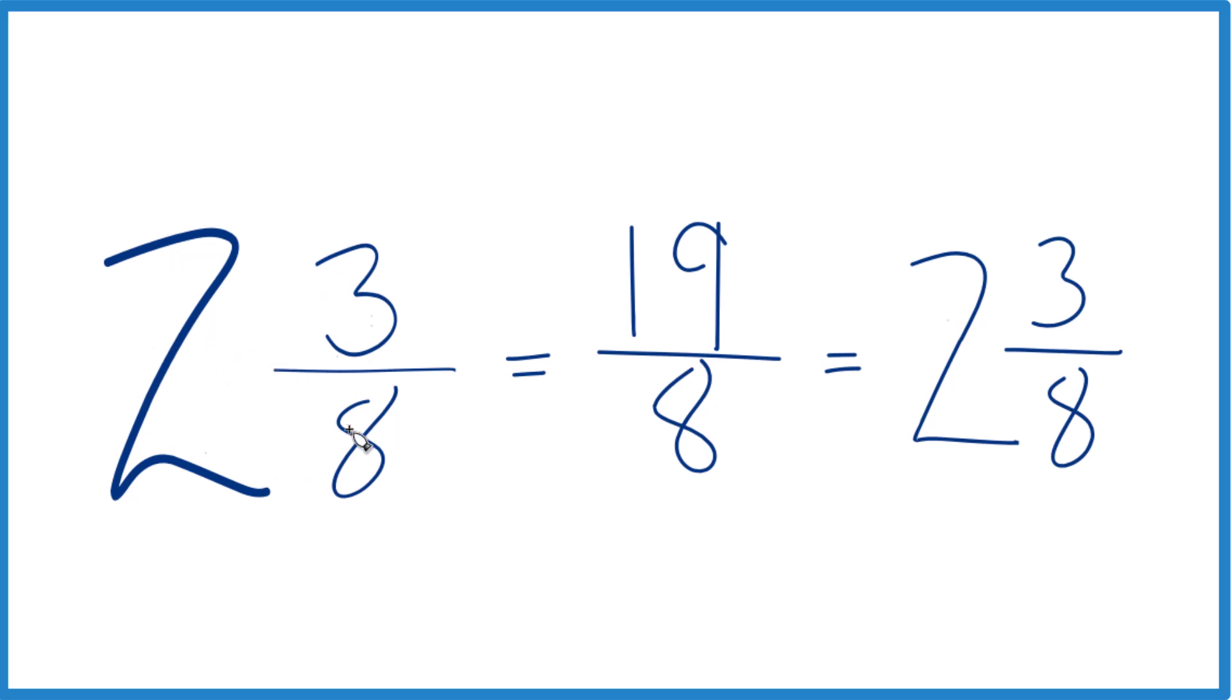In the mixed number 2 and 3 eighths, that's equal to our improper fraction 19 eighths. They have the same value, they're just written differently, or represented differently. They have the same value.